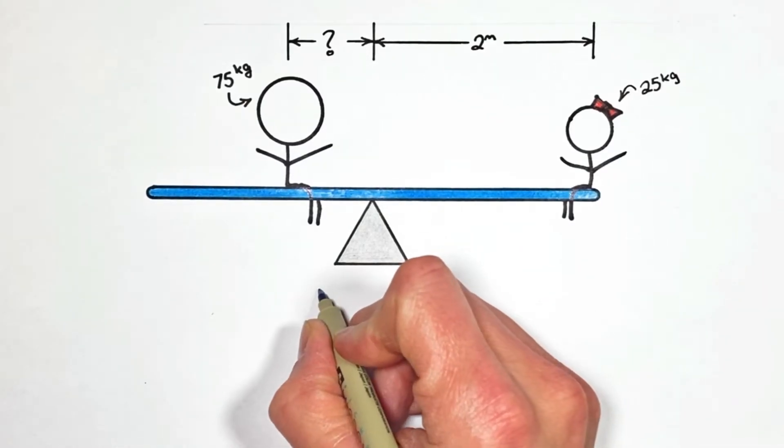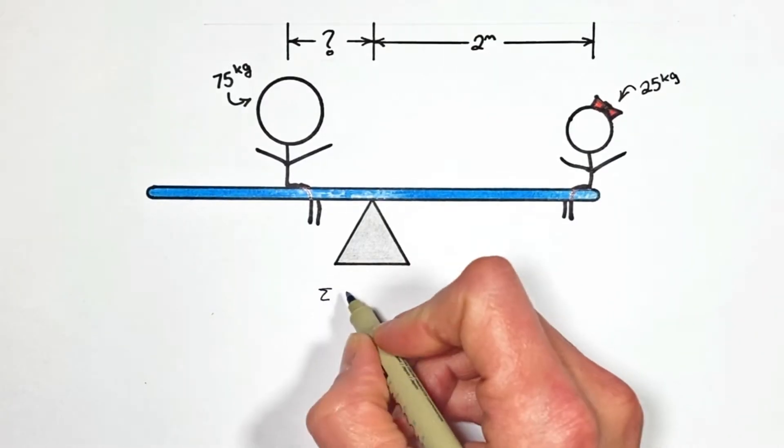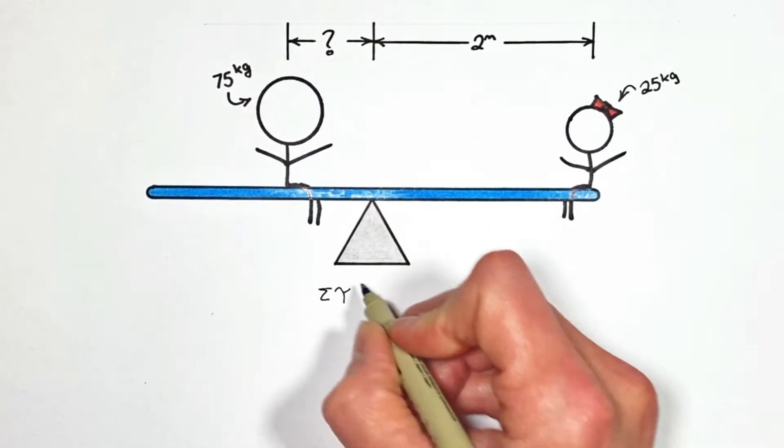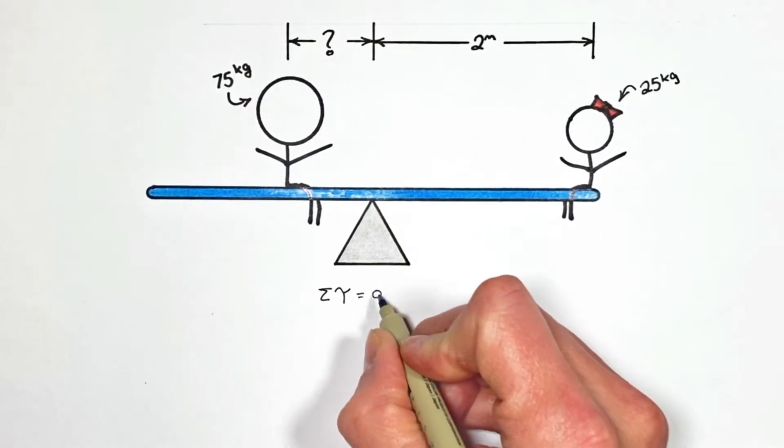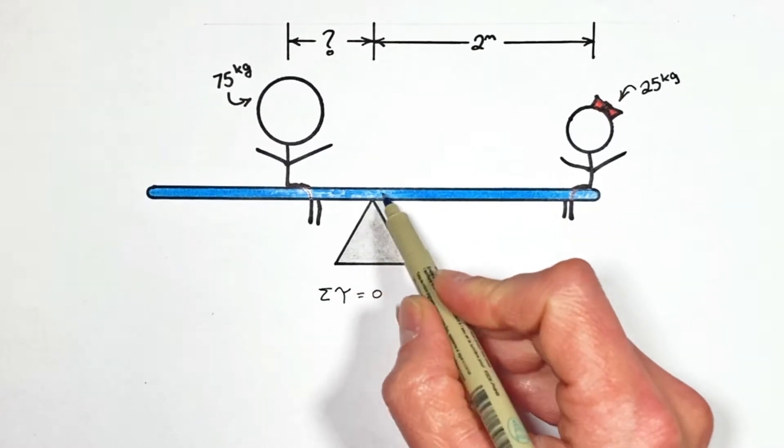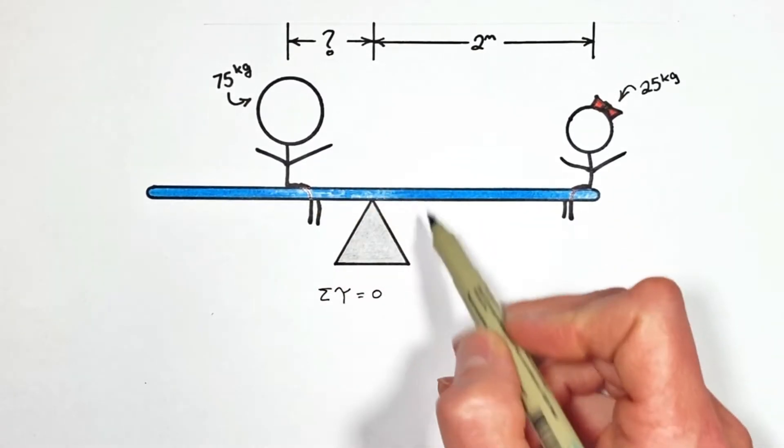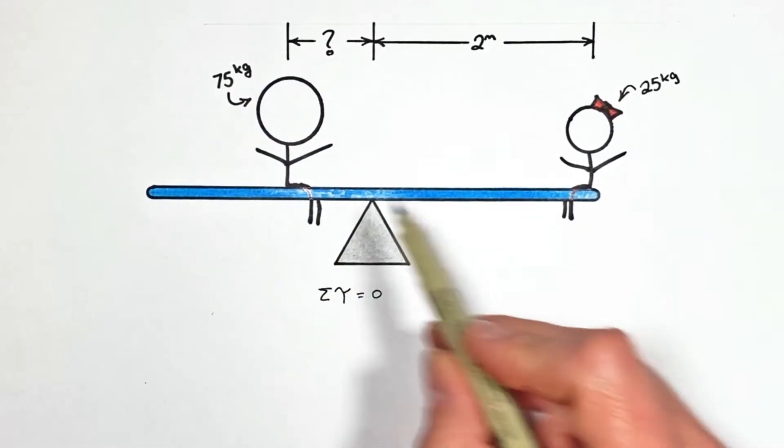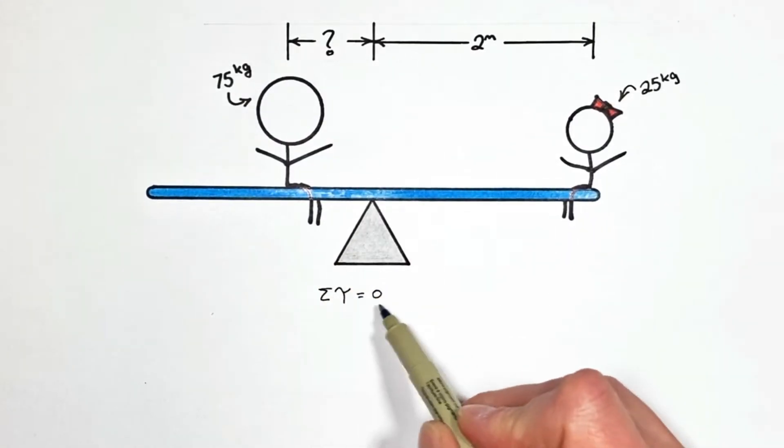Now the main idea in this problem is that the sum of all torques acting on the teeter-totter, or seesaw, around the pivot point, that's right here, is equal to 0. You see, a torque would cause this teeter-totter to rotate in one direction or another, but we want it to stay balanced, which means the total torque needs to add up to 0.